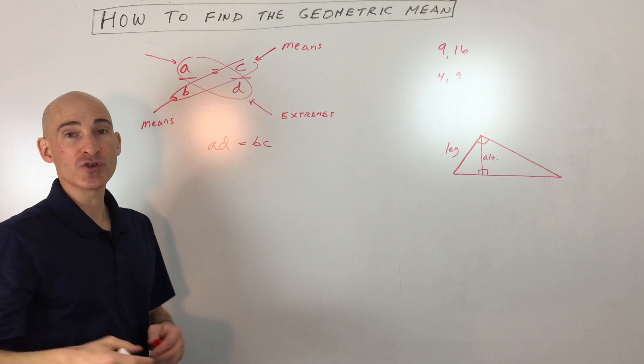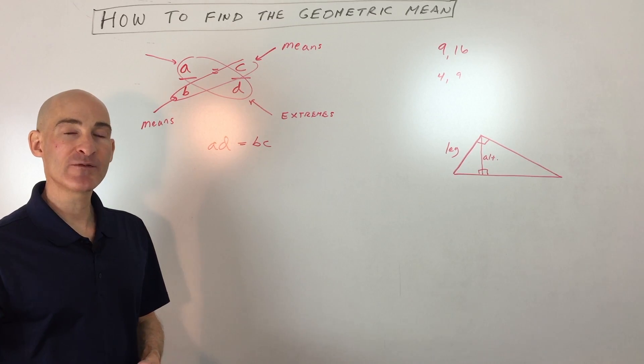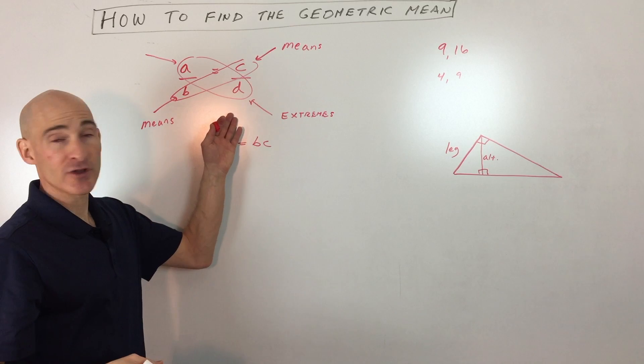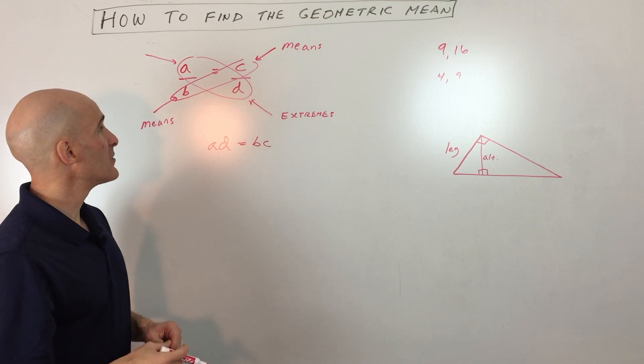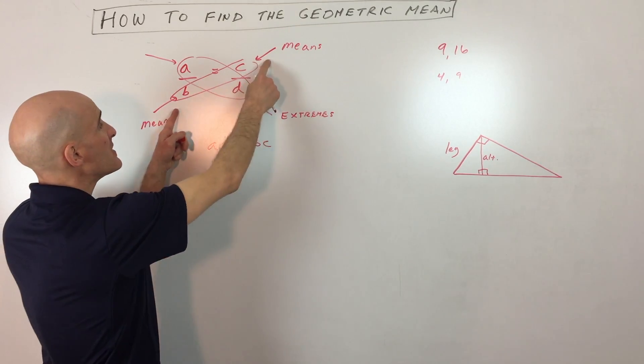Now, just want to make a note: we've learned that as cross-multiplying, but another name for this way of solving equations is called the means-extremes property. And basically what the means-extremes property tells us is that the means...